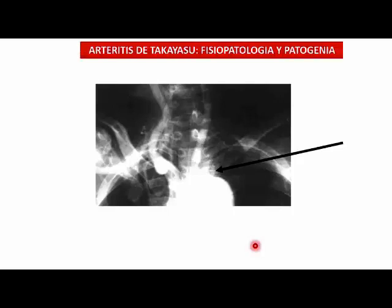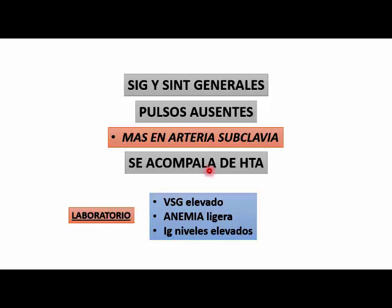Son enfermedades raras. Los signos y síntomas generales: pulsos ausentes por el aneurisma. Lo que sí puede encontrarse al final son pulsos ausentes en los miembros cuando ya se produce el aneurisma de aorta. Se acompaña generalmente de hipertensión, y en laboratorio la velocidad de sedimentación es alta, hay una ligera anemia y niveles de inmunoglobulinas elevados.